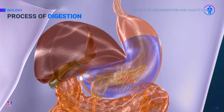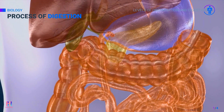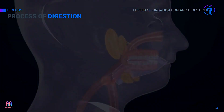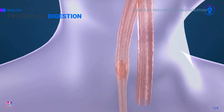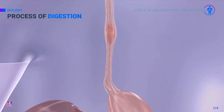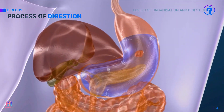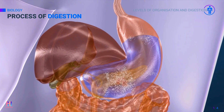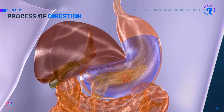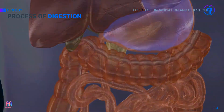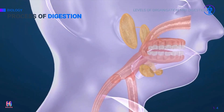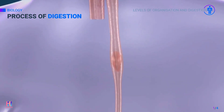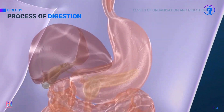Food first enters the body via the mouth — this is called ingestion. The food is chewed up by our teeth and mixed with saliva secreted from the salivary glands. The saliva contains some digestive enzymes which help in the first stages of breaking down food. From the mouth, the food passes down the esophagus where it eventually reaches the stomach.